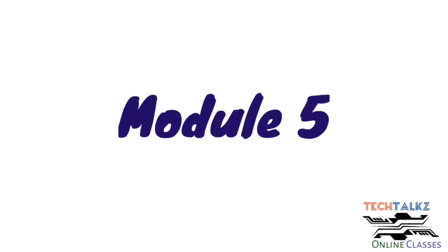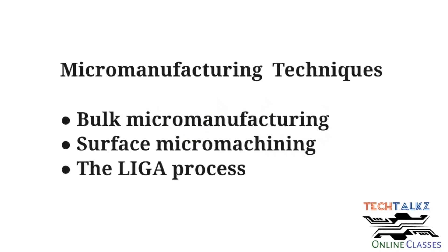Let's start Module 5. In Module 5, there are three different types of Micro Manufacturing techniques. The first one is Bulk Micro Manufacturing. The second one is Surface Micro Machining. And the third one is the LIGA Process.